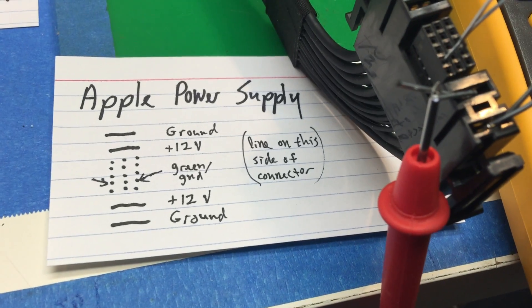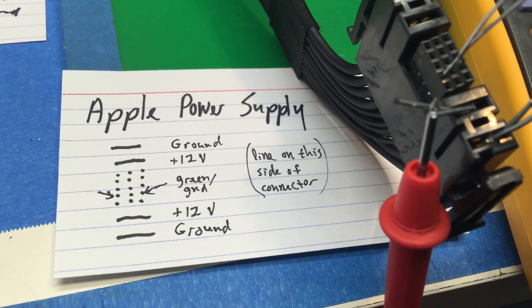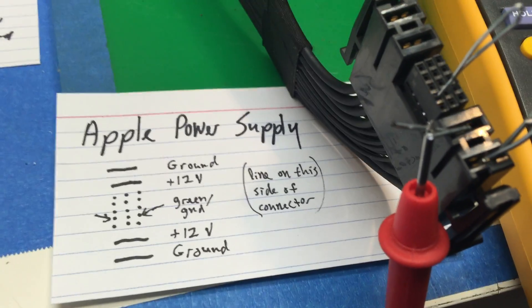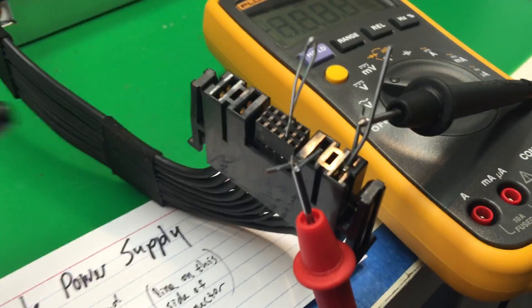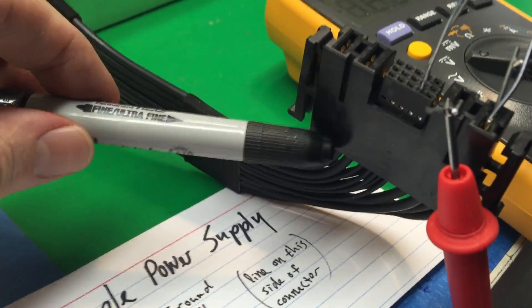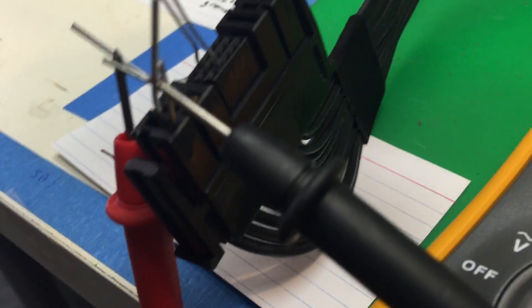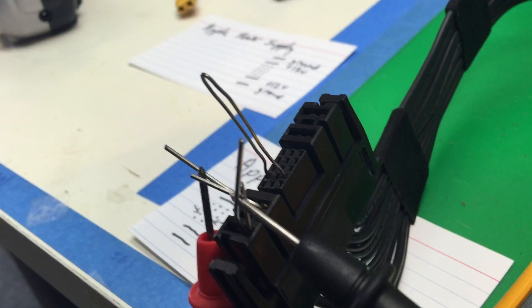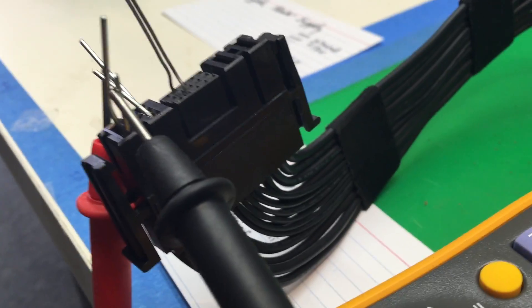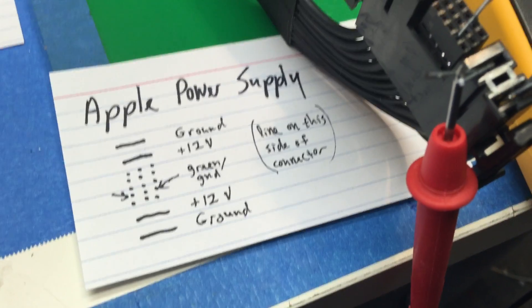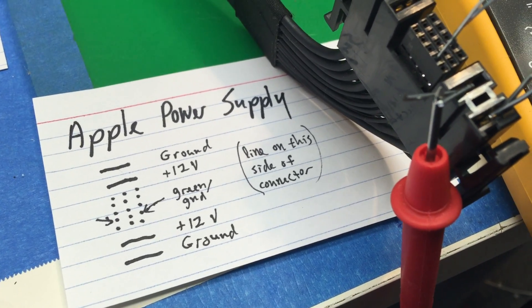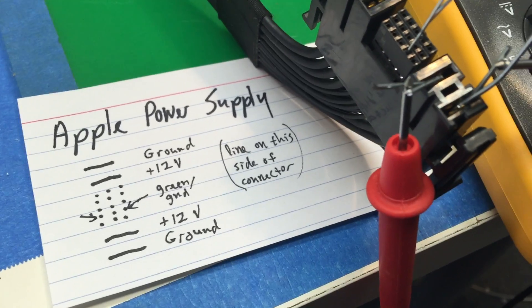It turns out it's the second pair from the bottom on the left and the right. If you look here, you'll see the left side as I've labeled it is smooth, and the right side as I've labeled it has the line across there. So if you do that, you should be able to set up a nice battery charger with an old Apple power supply.